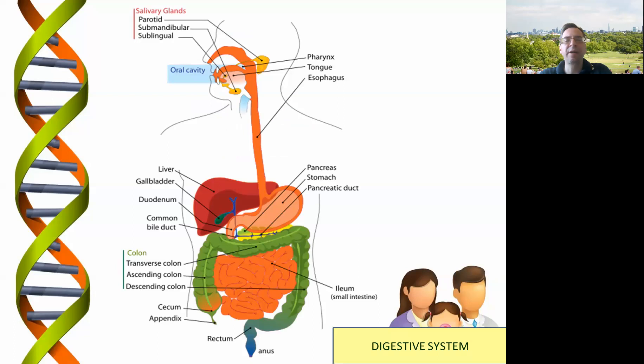We've got the oral cavity, pharynx, tongue, esophagus going down into the stomach and pancreatic duct. We've also got the liver and different structures of the colon.